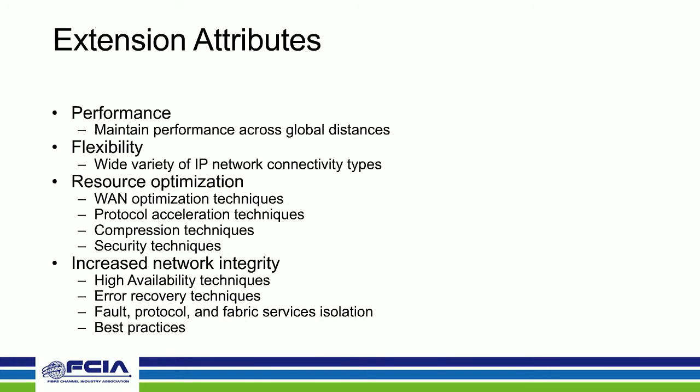Key attributes for extension: performance — move data as quickly as possible. Flexibility for different IP networks and connectivity types, including different latencies and bandwidths. Resource optimization — WAN optimization techniques as best you can, and protocol acceleration, which may apply to FICON, tape, or writing from arrays. Compression techniques and security techniques are also important.